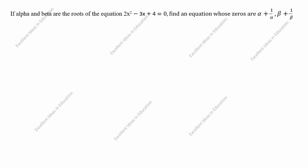Hi students, welcome to my channel Excellent Ideas in Education. Today we are going to solve this polynomial problem. If alpha and beta are the roots of the equation 2x² - 3x + 4 = 0, find an equation whose zeros are alpha + 1/alpha and beta + 1/beta.